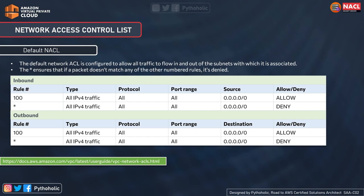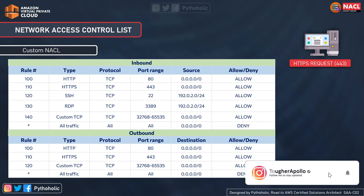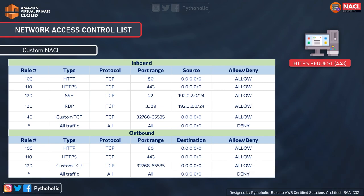Because network ACLs are stateless, traffic must be explicitly allowed both inbound and outbound, otherwise it won't work. Along with the default NACL, you can also customize the main network ACL or create your own for your subnets. Rule numbers in custom network ACLs are very important. When you see the custom network ACL inbound rule, you see columns of rule numbers like 100, 110, 120, 130, 140.